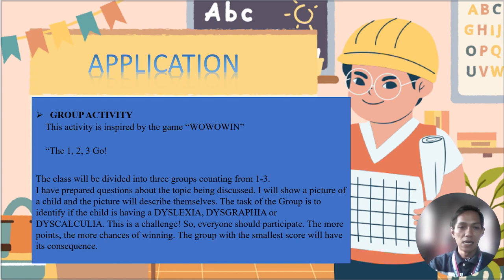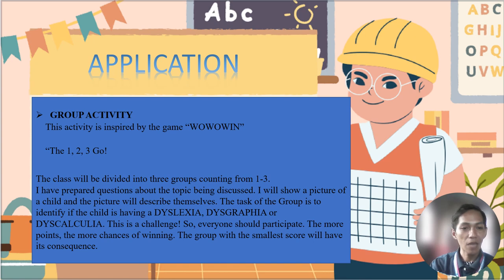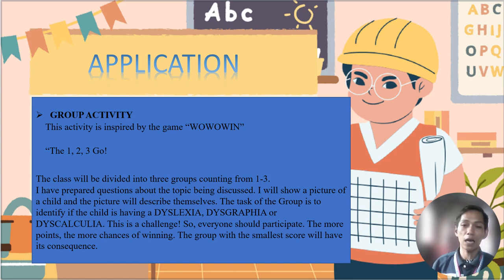Now for our group activity, inspired by the game 'Jollibee.' The class will be divided into three groups. I have prepared questions about the topics discussed. I will show a picture of a child, and the picture will describe whether they have dyslexia, dysgraphia, or dyscalculia. Everyone should participate — the more points, the more chances of winning. The group with the smallest score will have a consequence. Again, I am Mr. Vicente Mpisa Jr. If you have questions, comment below and I will answer. Thank you and goodbye.